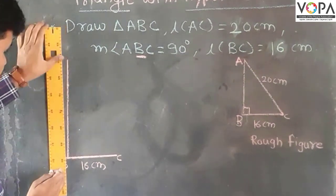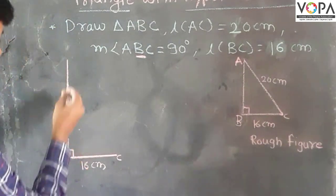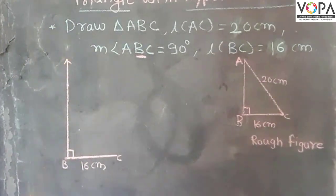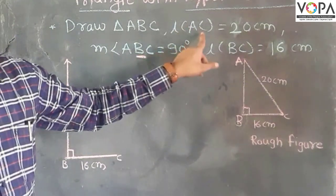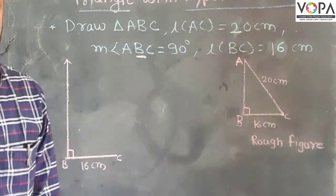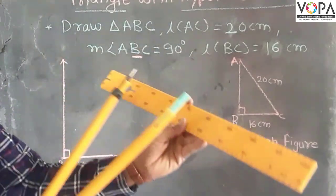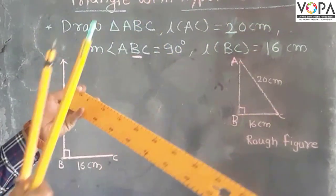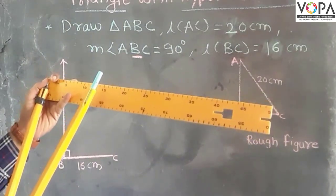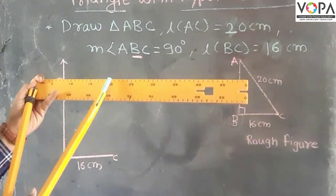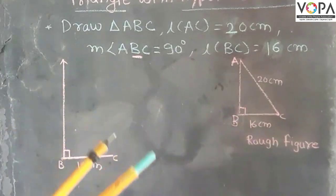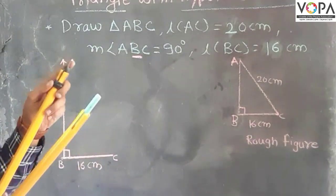And now the third one is length of AC is 20 centimeters. Take the compass and take the distance between the needle point and the pencil is 20 centimeters.